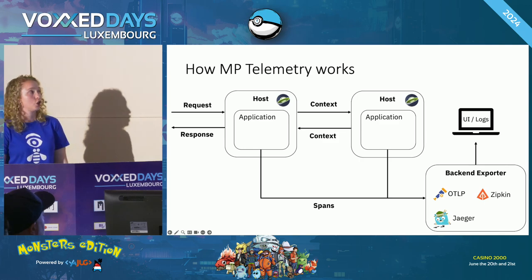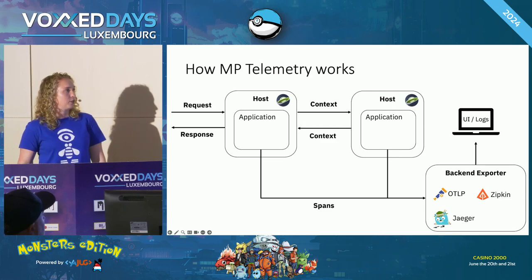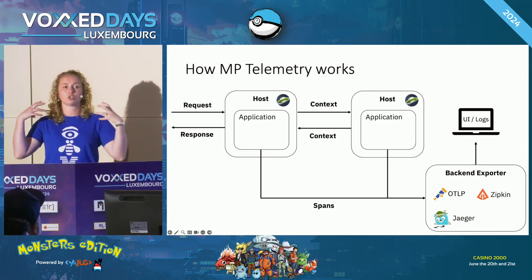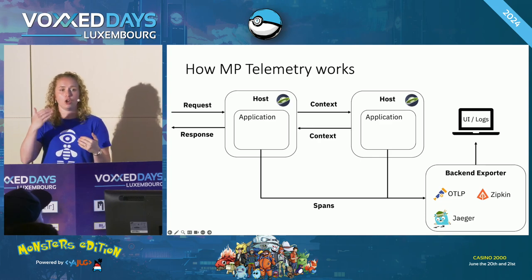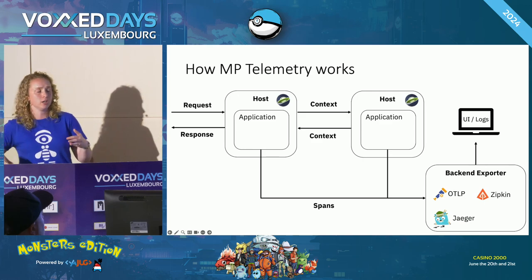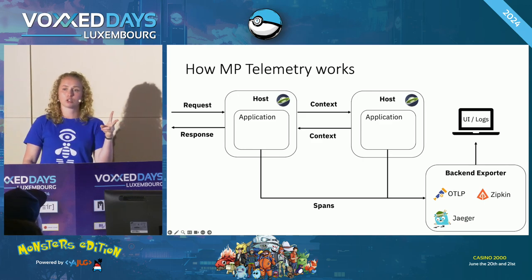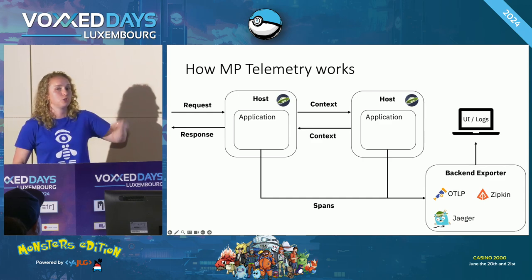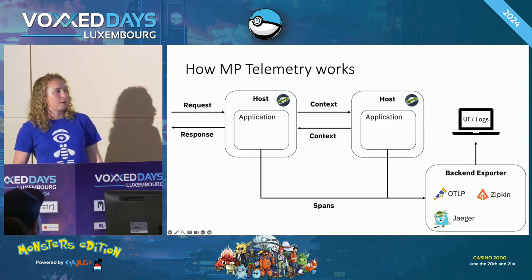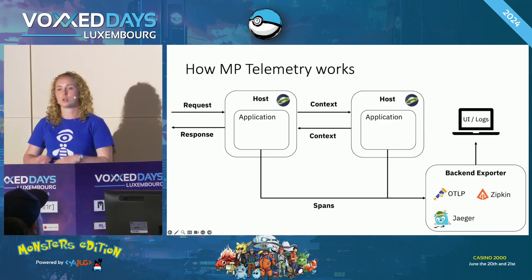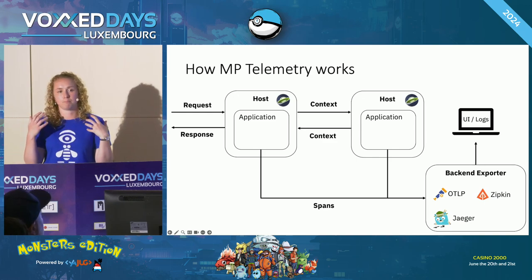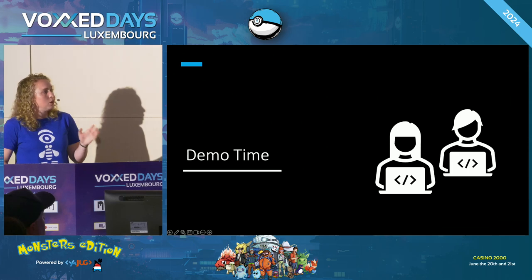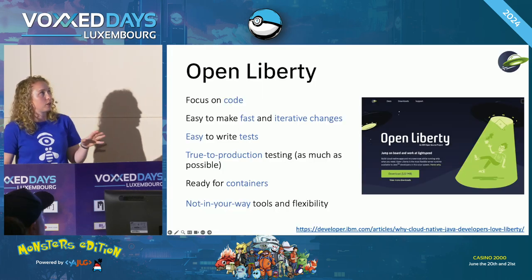Our demo application has two microservices: inventory and system. They're communicating to each other, and we're collecting context and spans via MicroProfile Telemetry — which uses OpenTelemetry under the covers — and sending that to our back-end exporter. The nice thing is this works with lots of different observability back-ends and platforms. In our case we're going to be using Jaeger, but it's really up to you as to what you use in your own applications. For this demo, we're going to be using Open Liberty.